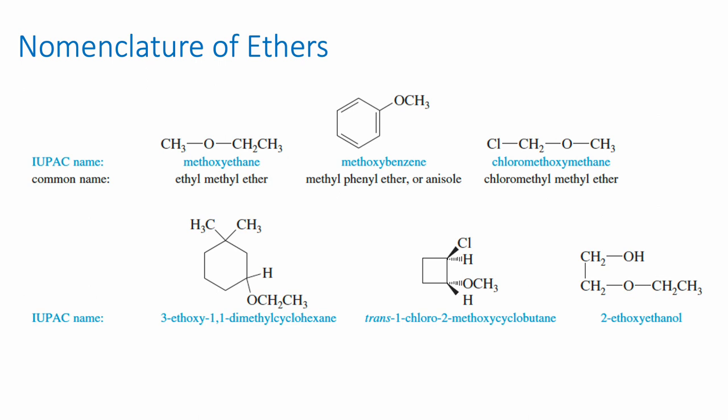Notice that the word 'ether' does not appear in the IUPAC name even though we call this functional group an ether. We often use the common name instead. In the second example, there's a methyl on one side of the oxygen and a phenyl group on the other side, so the common name is methyl phenyl ether. The IUPAC name looks for the longest continuous chain — six carbons in the benzene ring — and then the methoxy branch, giving methoxybenzene.